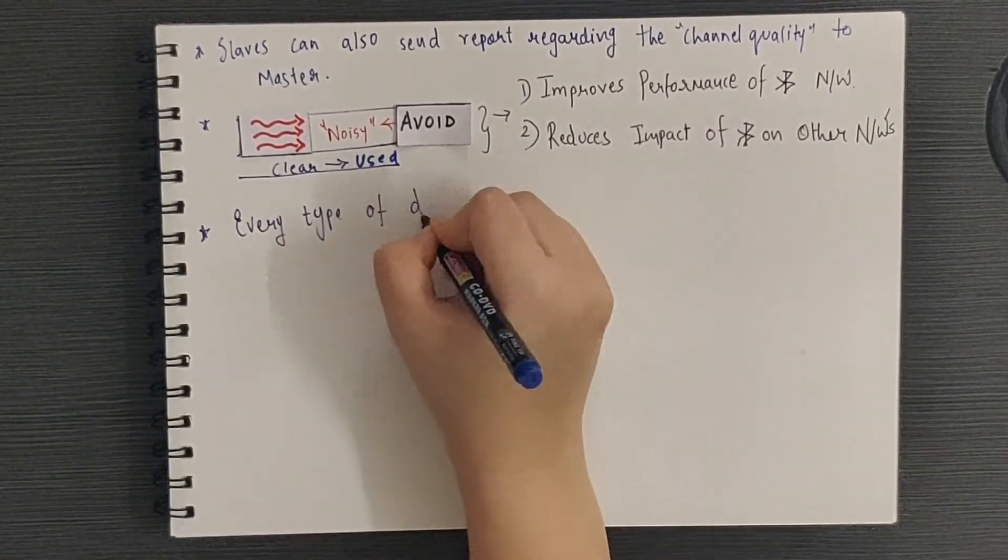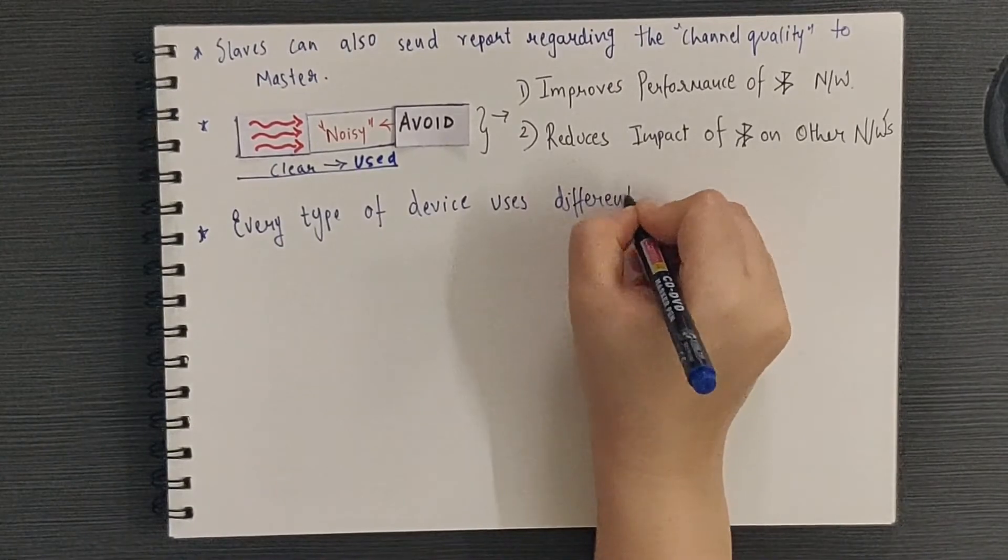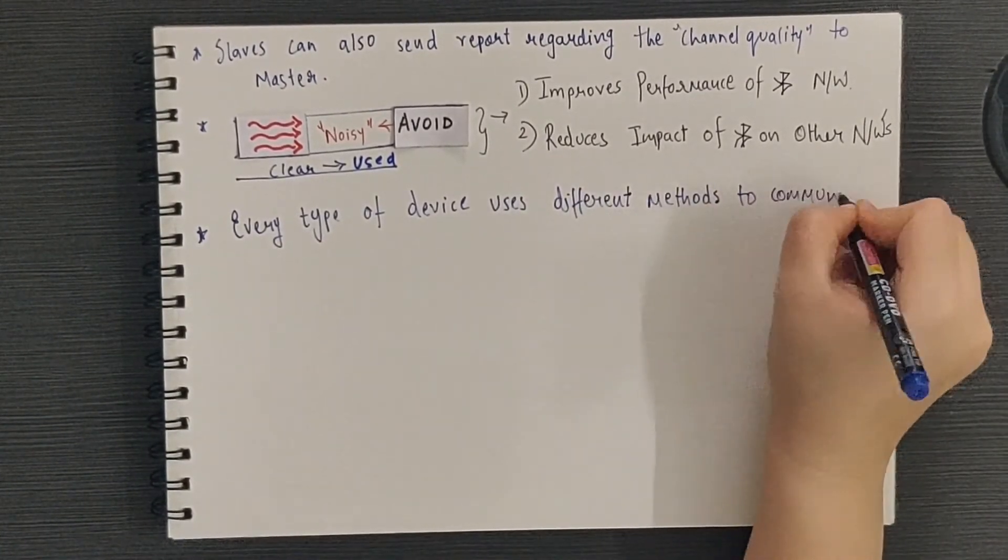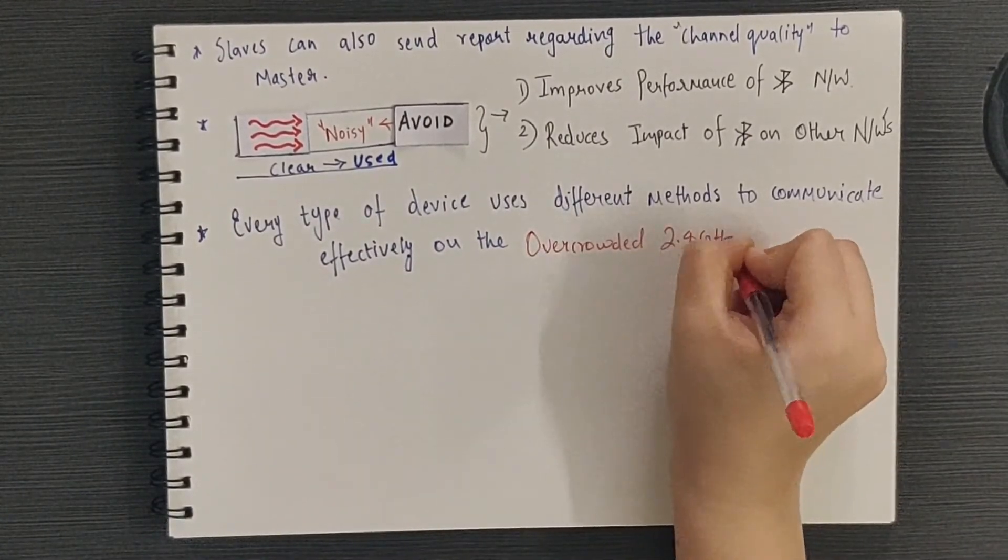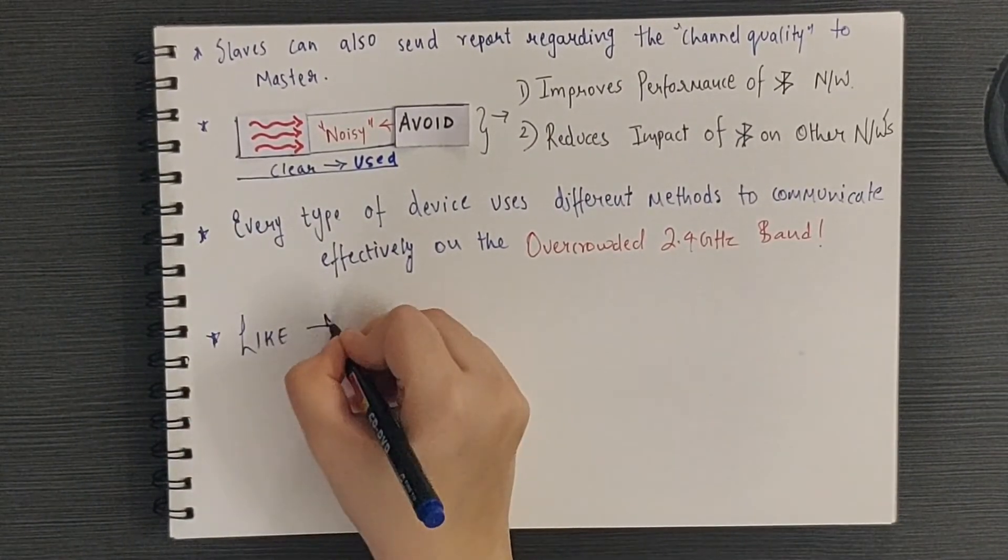So to conclude, every type of device, be it BLE-based or Wi-Fi-based or Zigbee-based, has to use different ways to minimize the impact of interference on this very overcrowded 2.4 GHz ISM band.